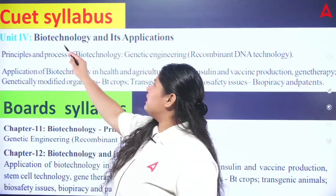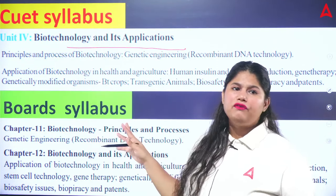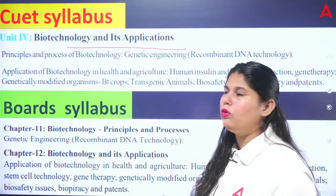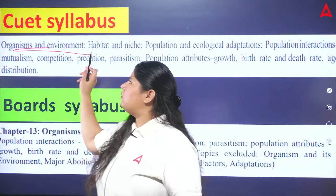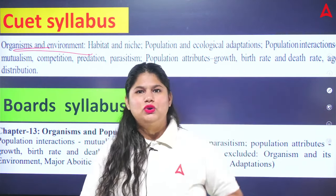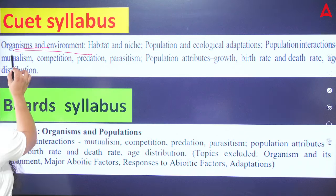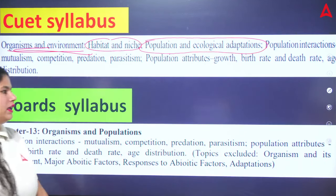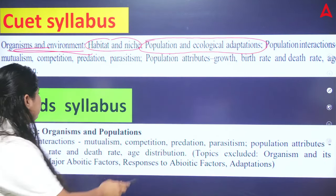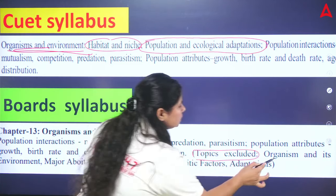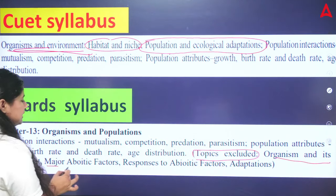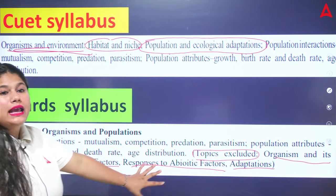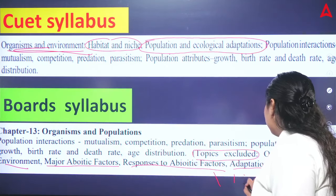Next is Organisms and Environment, the fifth unit. Some topics are removed. In the CUT syllabus there are habitat, niche, population, and ecological adaptations — but in the board, these are excluded. Topics excluded from the board include organisms and its environment, biotic factors, response to biotic factors, and adaptations. These are excluded in the board but included in CUT — one question from these always comes in CUT.